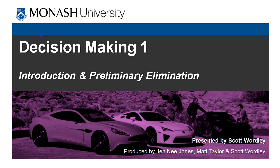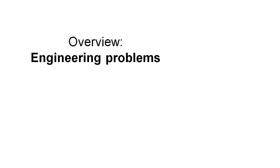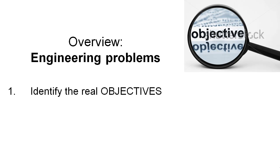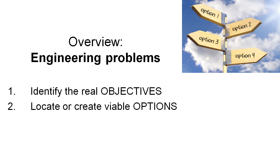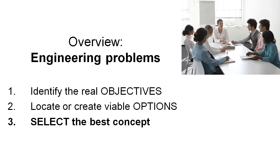Hi guys, it's Scott here. In today's video we're going to be giving you a short introduction to the decision-making process and talking you through how you go about eliminating some of the options that you might have at a very preliminary stage to make your job later on a little bit easier. So back to our engineering problems overview. We've done some work on identifying our real objectives using the OFFICE process, and we've completed step 2 of locating or creating viable options using the morphology method. In today's video we're going to introduce you to how you go about selecting the best concepts.